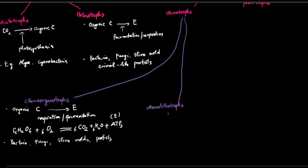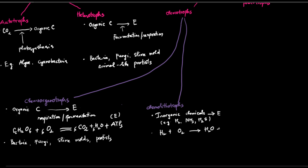How about chemo-lithotrophs? Chemo-lithotrophs, in contrast, can extract energy from inorganic compounds or inorganic chemicals. Inorganic chemicals can include hydrogen gas, ammonium, or hydrogen sulfide. For example, hydrogen bacteria can oxidize hydrogen gas into water and energy.